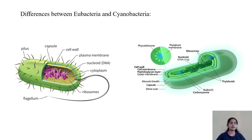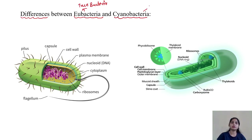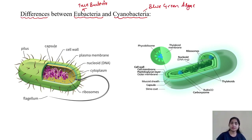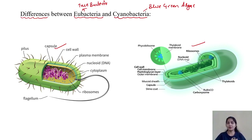Hello everyone. Let's start with today's lesson about the differences between eubacteria, which is also termed as true bacteria, and cyanobacteria, or blue-green algae. In this lesson we are going to discuss the basic features of these two organisms, as well as their similarities and differences.